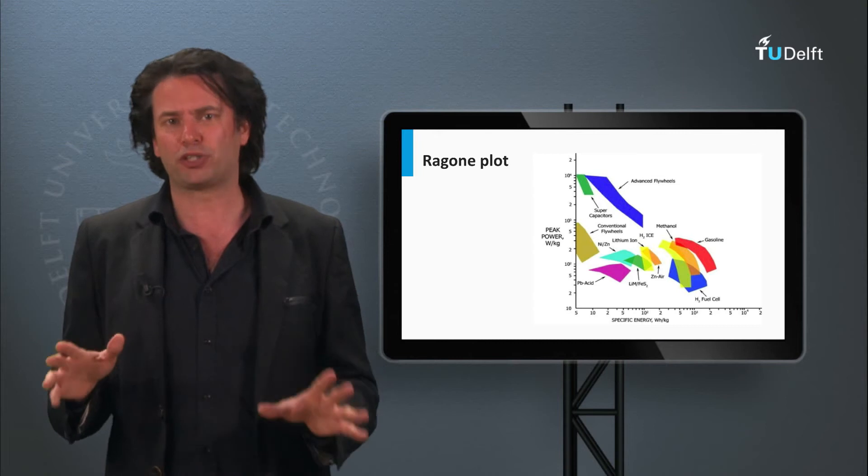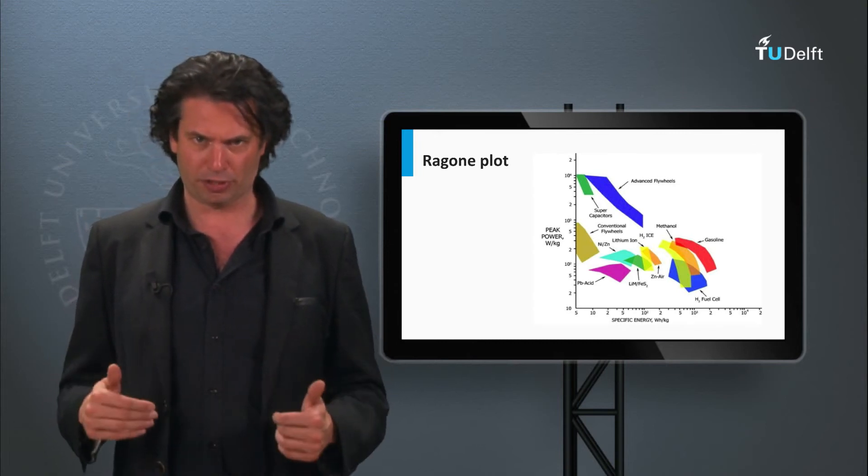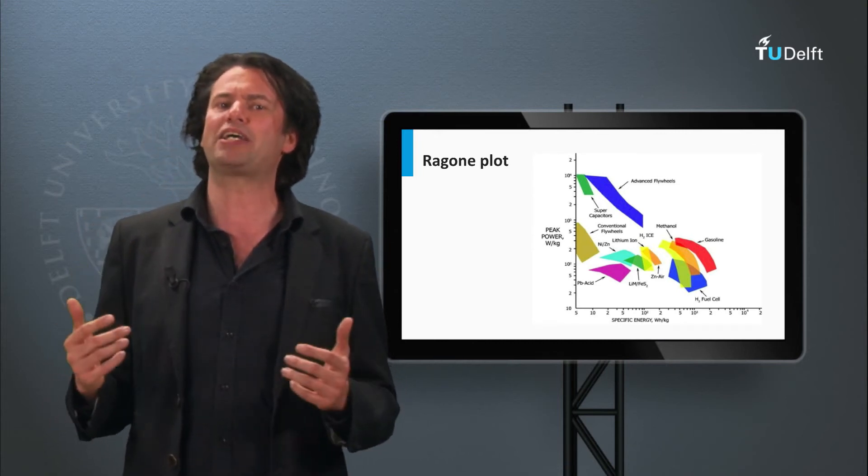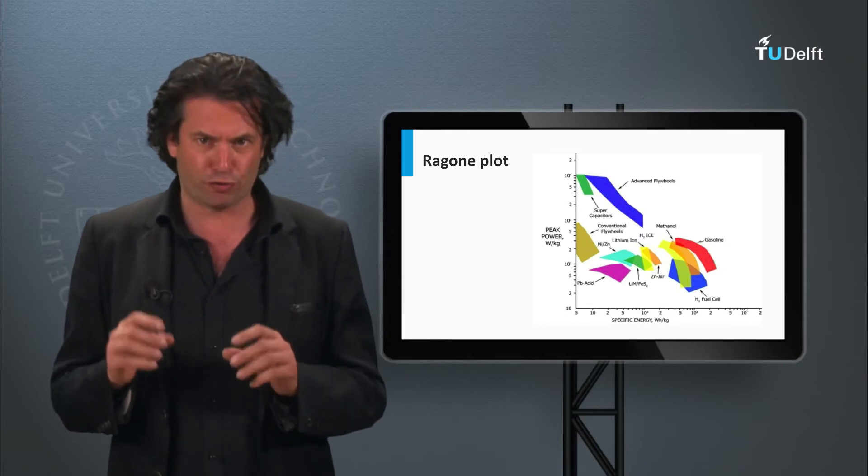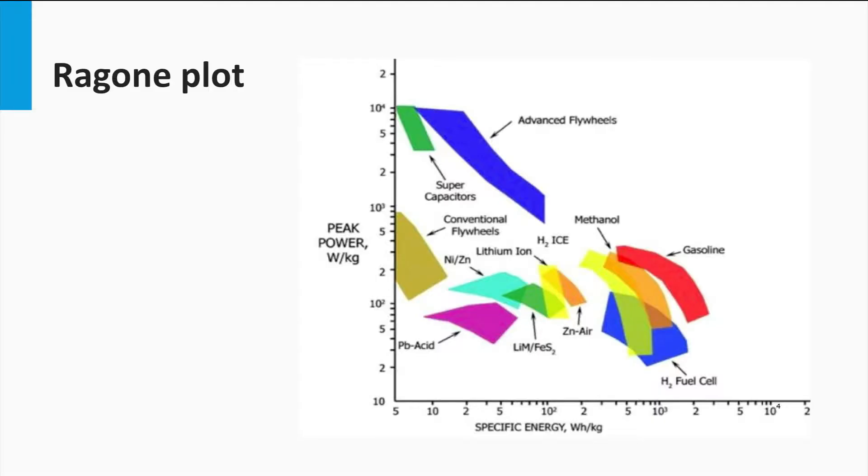There are several technological options to fulfill the storage requirements. How do we make an optimal choice for the storage system? Let's go back to the Ragone plot again. For solar applications, depending on the scale of implementation, we need a high energy density and a reasonable high power density.